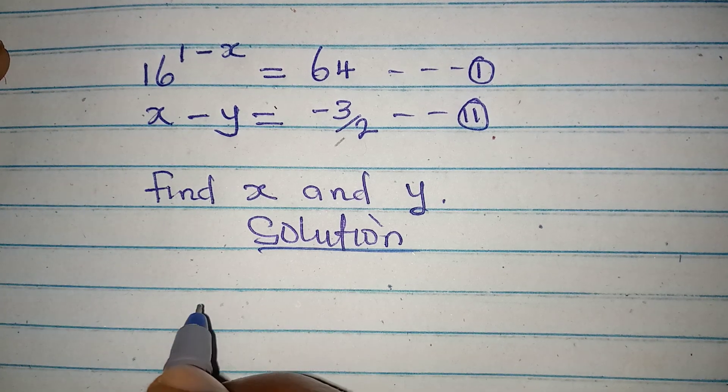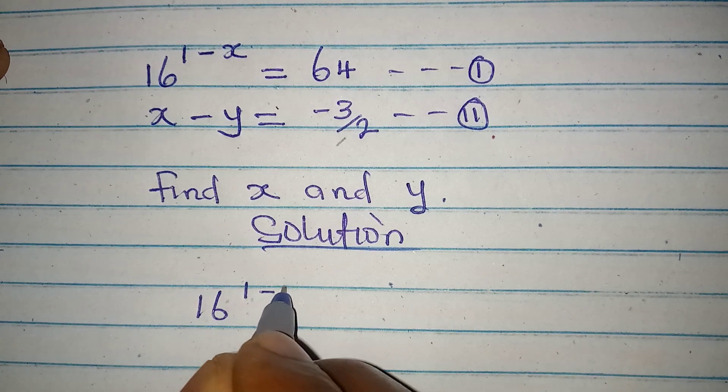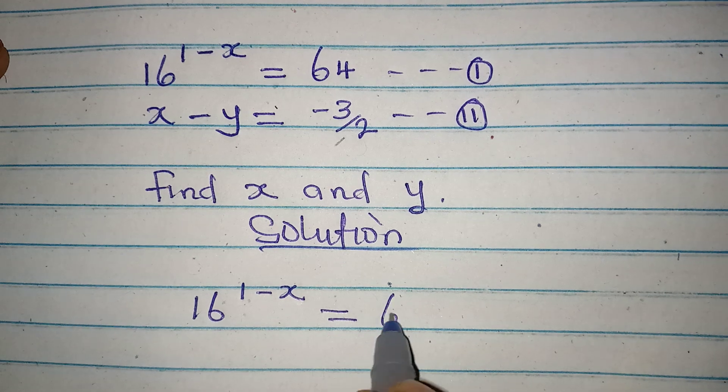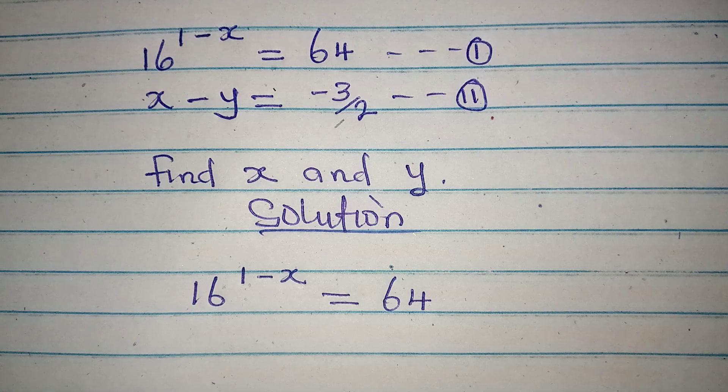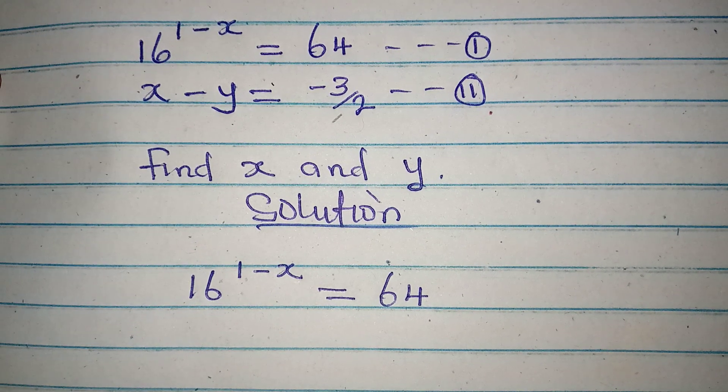From equation 1 we have 16 to the power of 1 minus x equal to 64. This is our equation 1. And from here we can just get the value of x. Let's get the value of x.